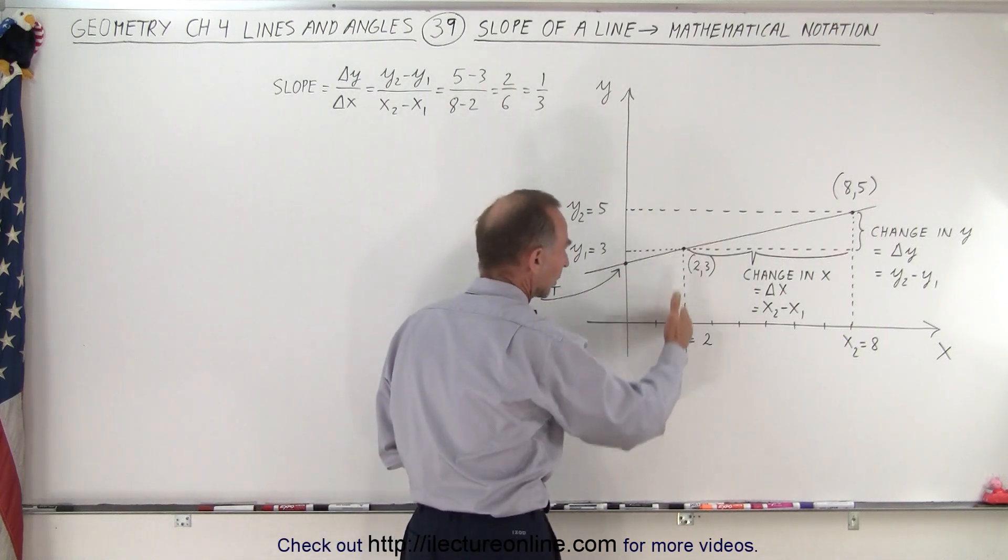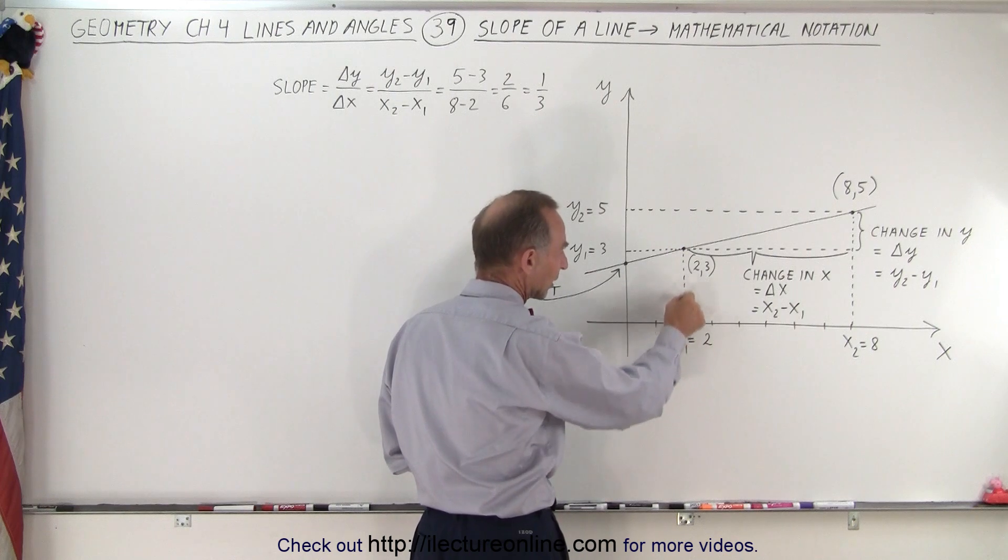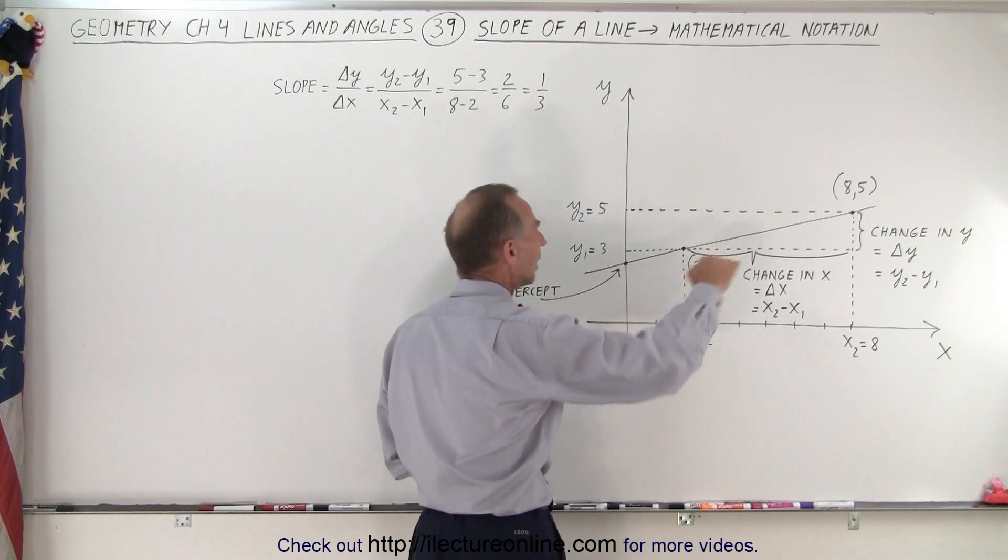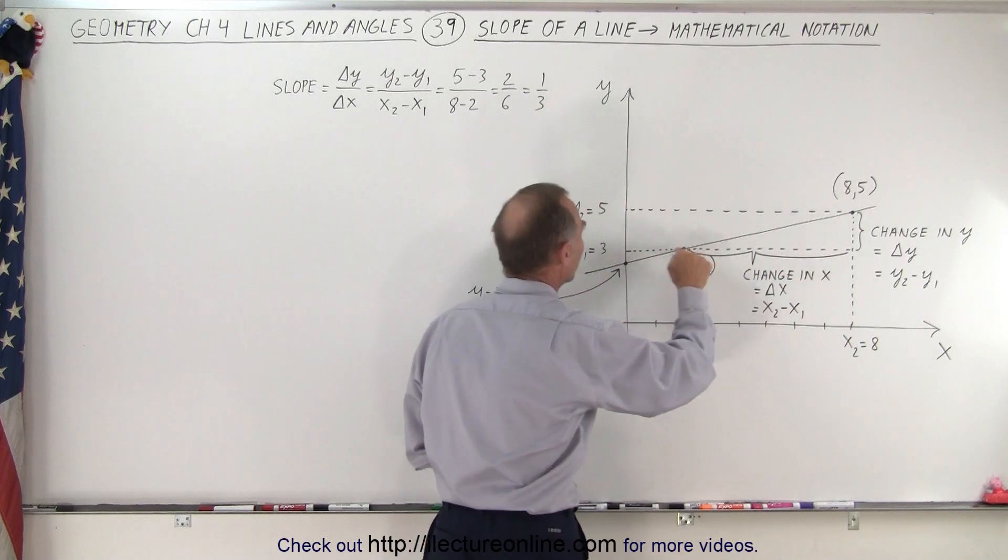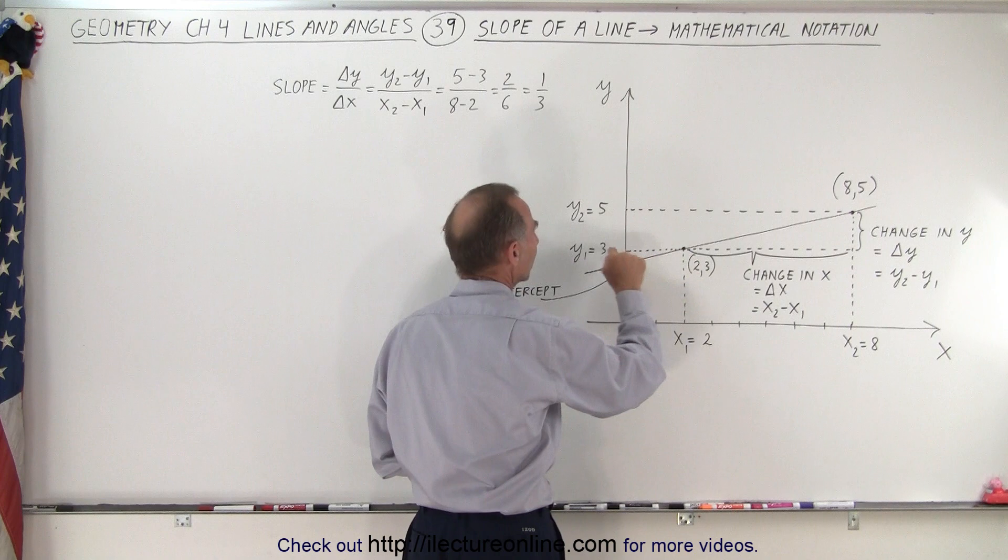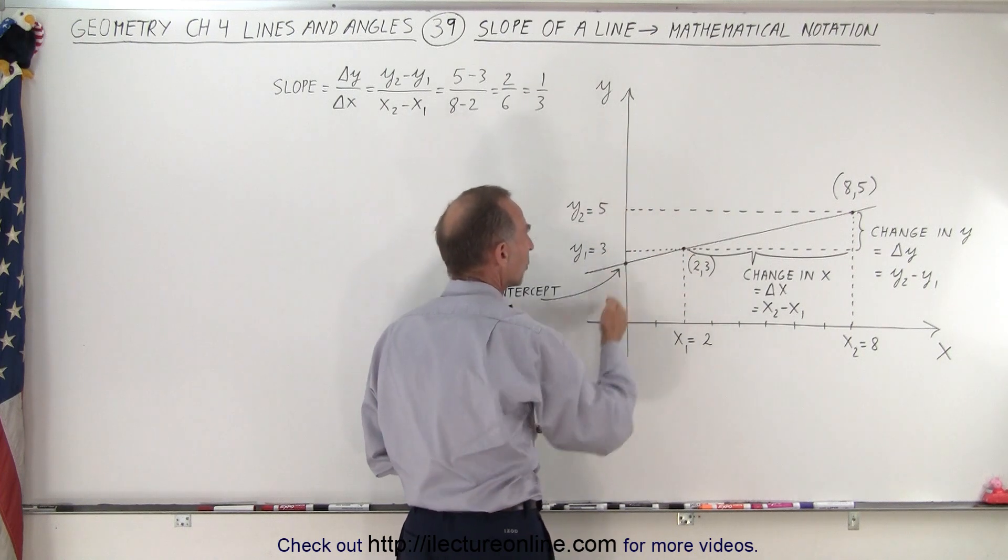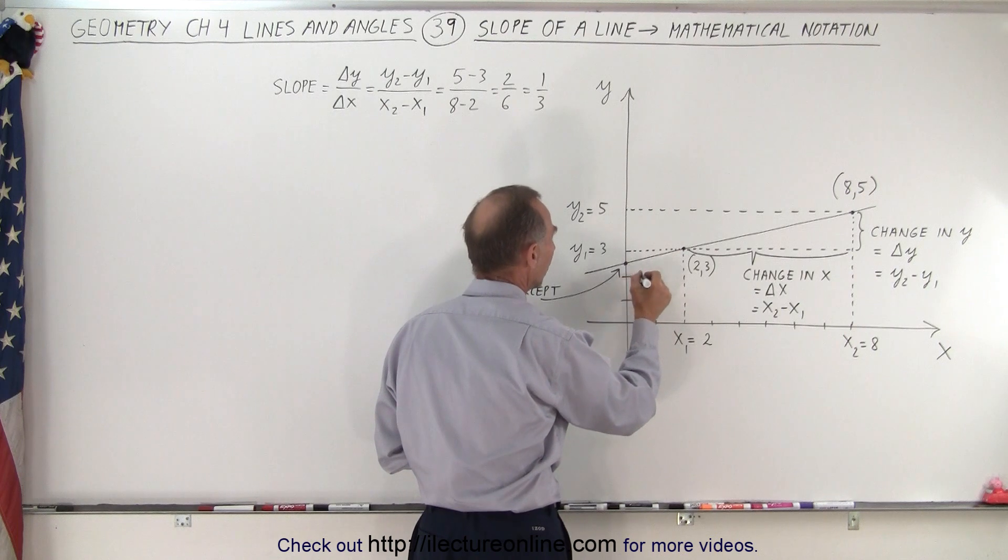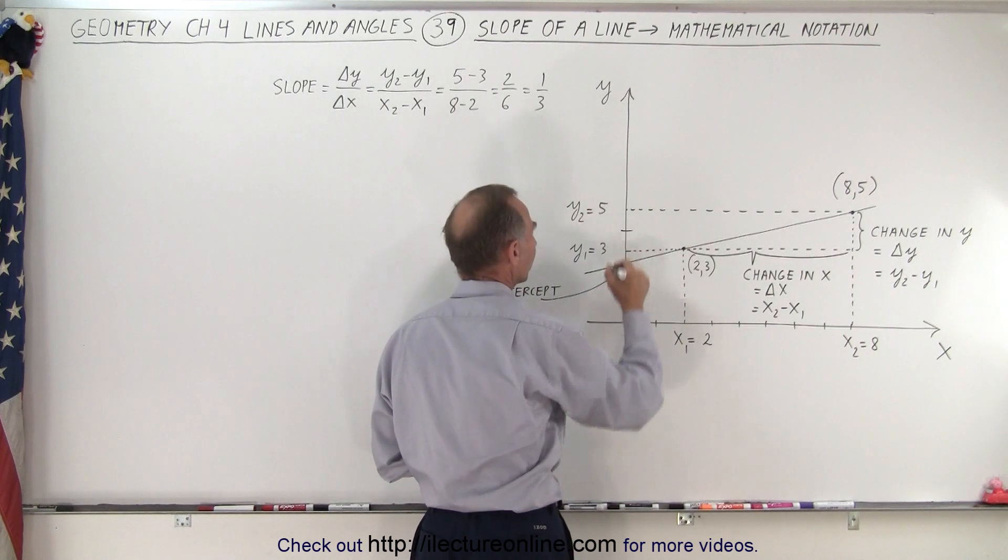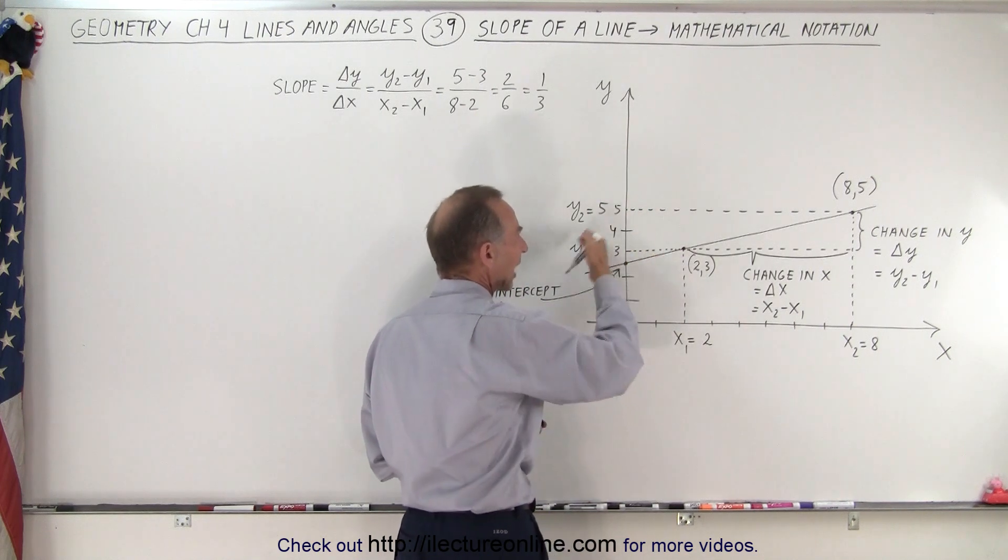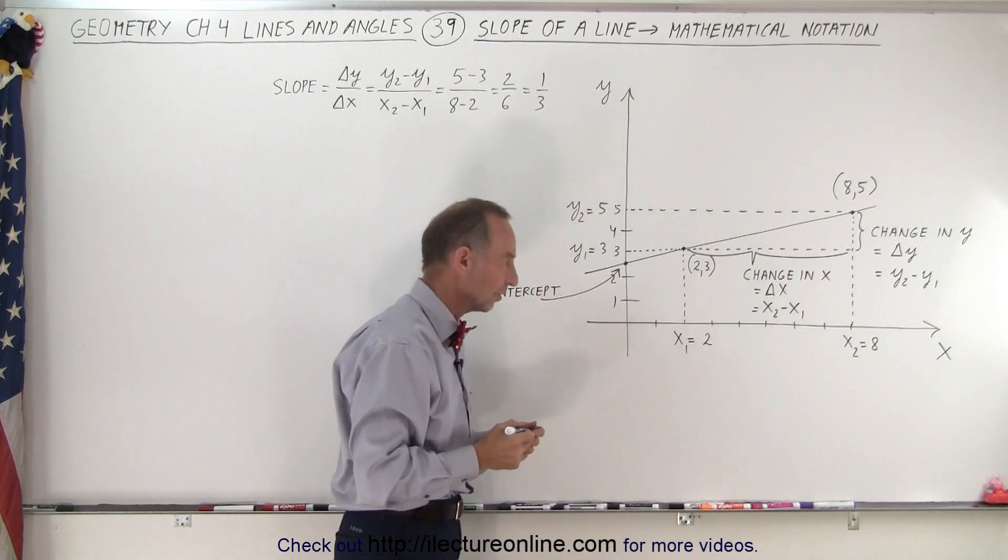If you draw a vertical line from the point to the x-axis, you get the value on the x-axis corresponding to that point. And if you draw a horizontal line from the point to the y-axis, notice that this y-value here corresponds to the y-value on the y-axis. So we can label them as 1, 2, 3, 4, and 5, and you can see how those values stack up on the y-axis.